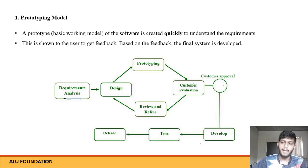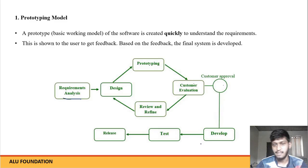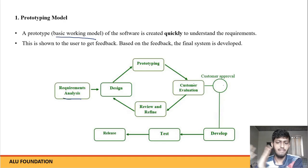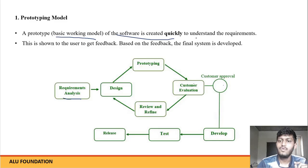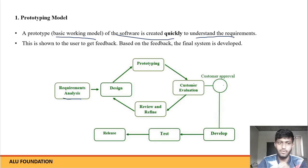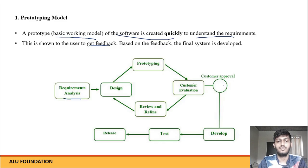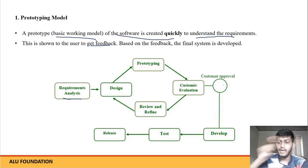The prototype is a basic working model. When we want to make a final application, we first create this basic working model quickly to understand the requirements. We show it to the client as a small working model. Once the prototype is approved, we then proceed to build the final application. So the Prototyping Model falls under the Evolutionary Process Model.